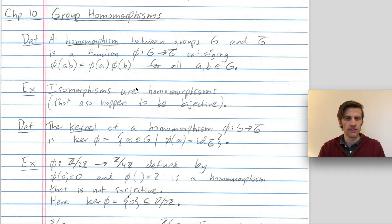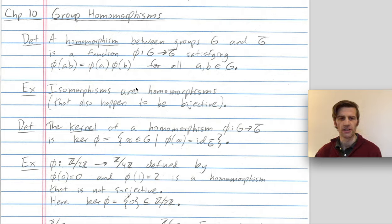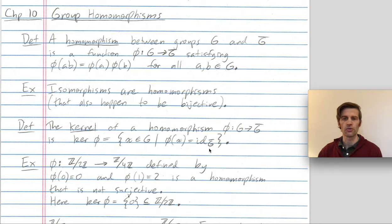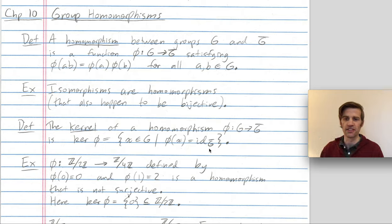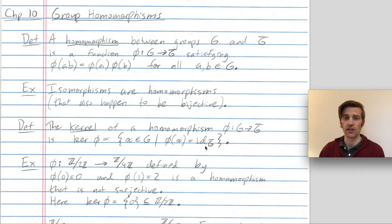Another important piece of vocabulary is the kernel of a homomorphism. The kernel of phi from G to G-bar is the set of all elements in G that get mapped under phi to the identity of G-bar. Kernels weren't so interesting for isomorphisms because the kernel of an isomorphism was just the identity of G — isomorphisms map the identity of G to the identity of G-bar, and since isomorphisms are injective, only the identity can map there. By contrast, in homomorphisms, many things can get mapped to the identity of G-bar. We'll later see that the kernel is always a normal subgroup of G.